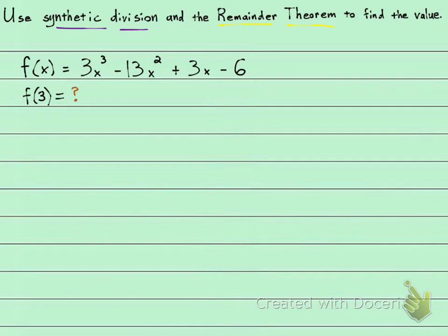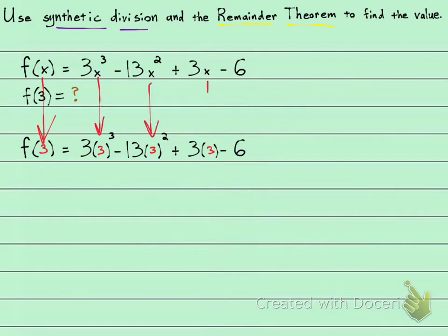And one way that you've probably done this before, evaluate a function, is to actually plug in 3 everywhere where you see an x. And oftentimes that is very straightforward, and you can get your answer that way. But there's another way to do it, and it's called the remainder theorem. And we are going to do that right now.